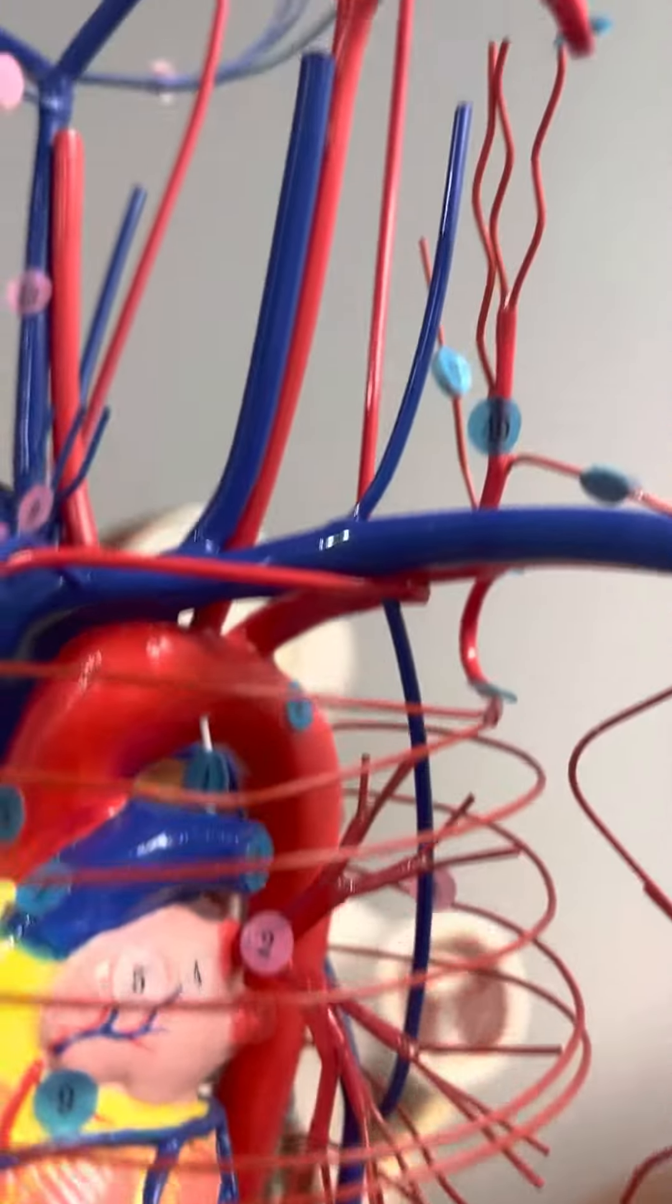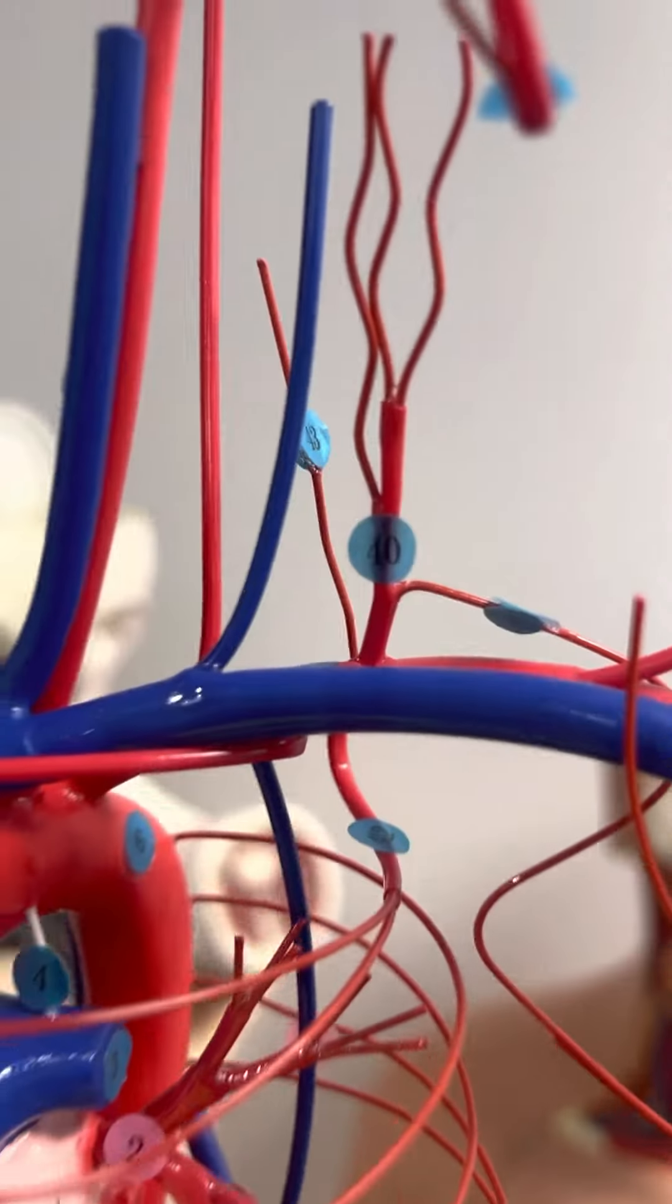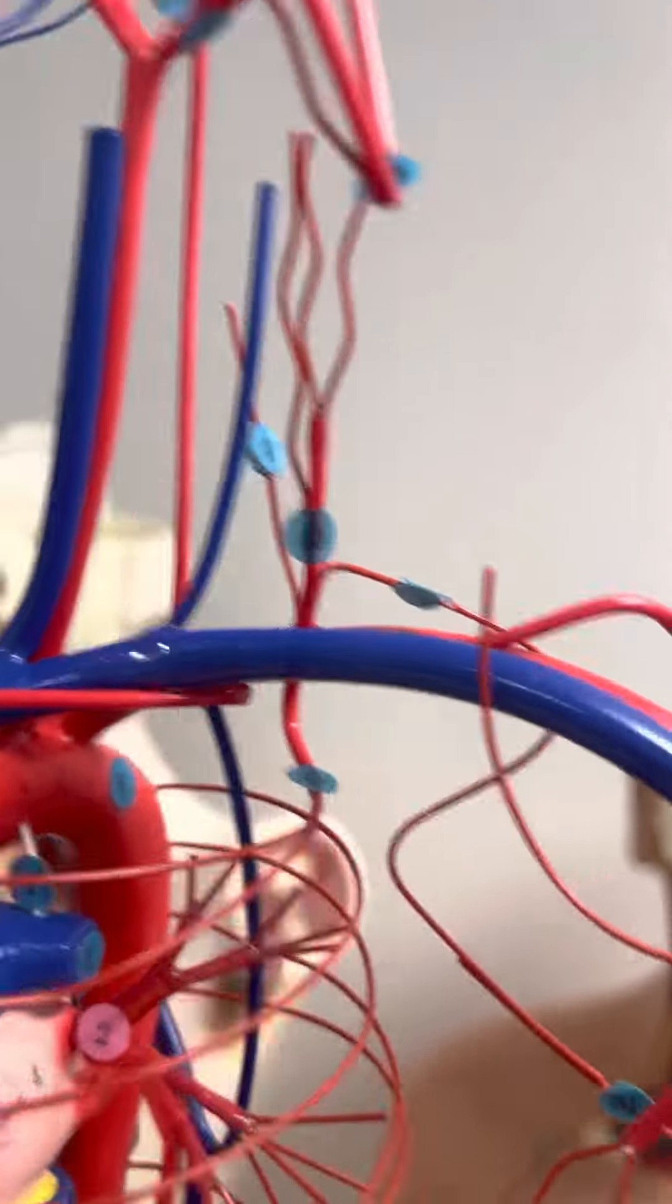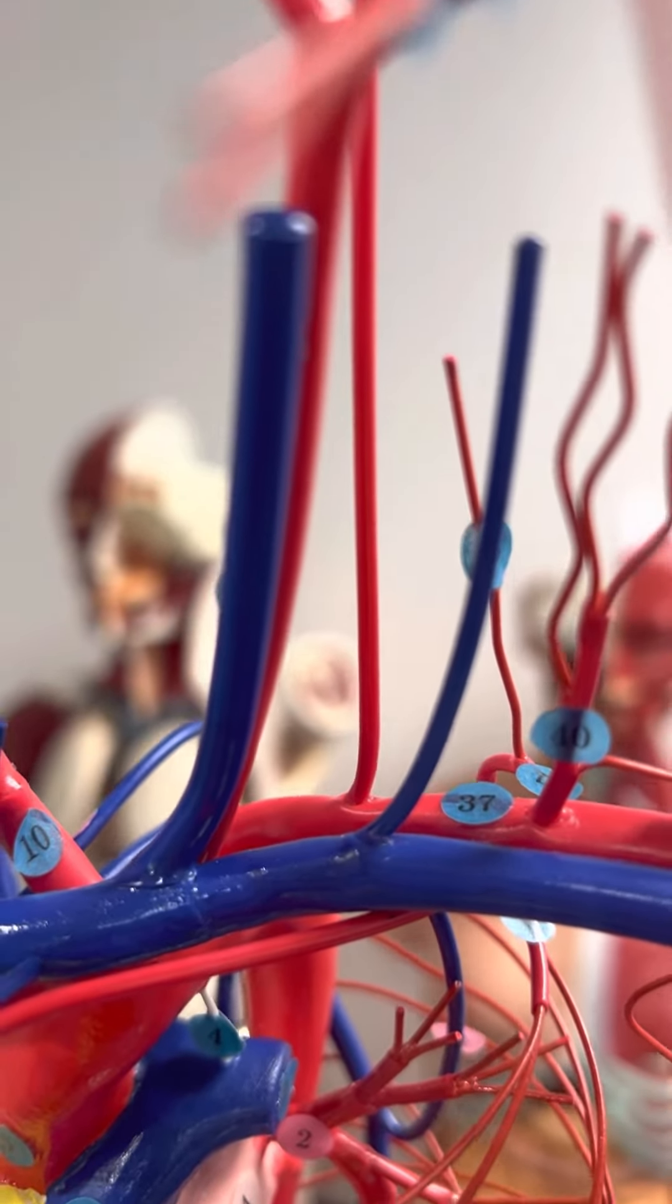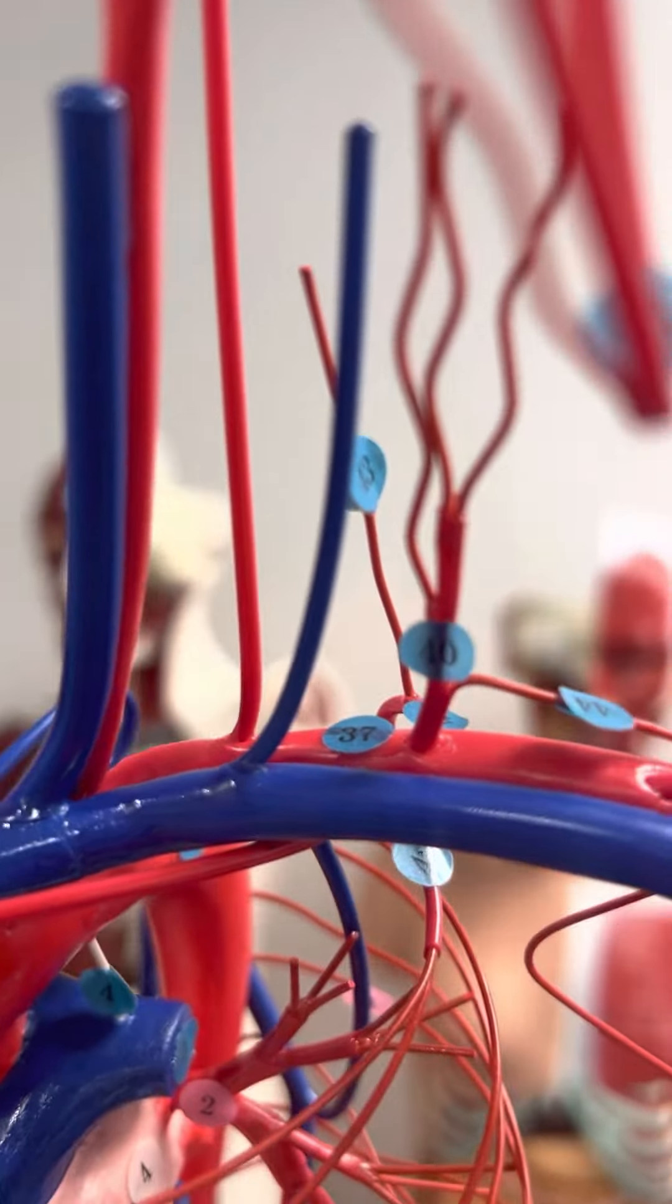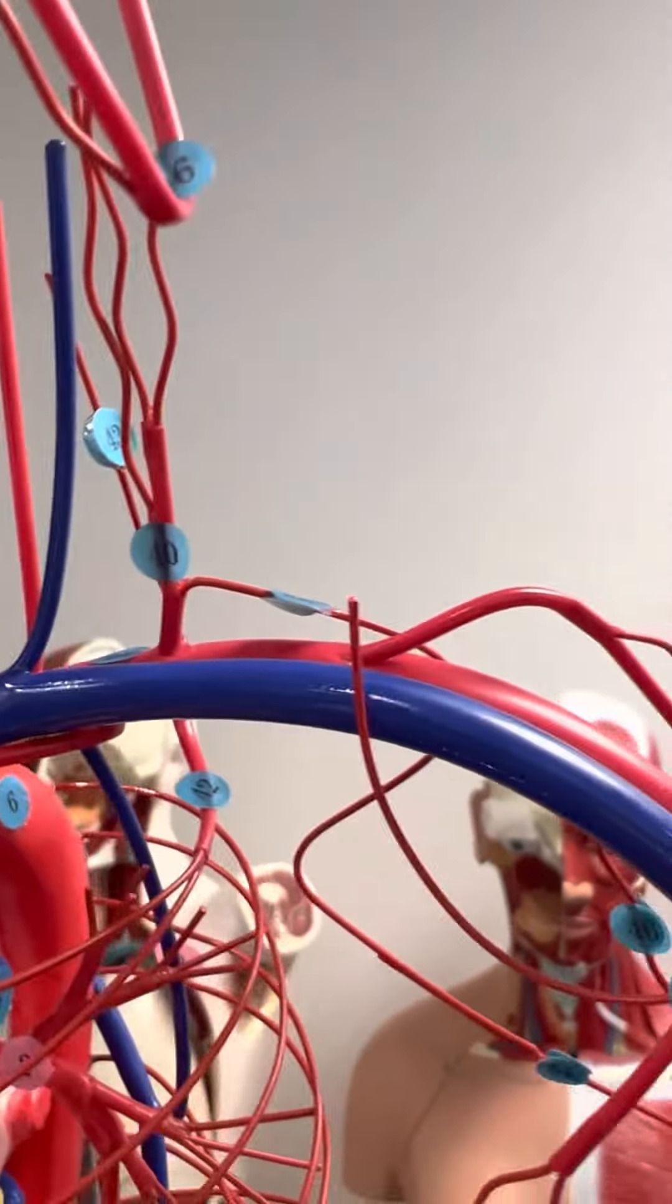So you have from the subclavian, you have one going up, the vertebral. And then you have the second one here that's going up, which is the thyrocervical.